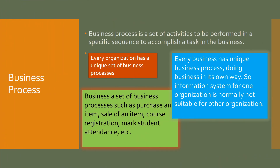We also need to learn about business processes, which are the core construct of any business. A business process is a unique way of performing activities in doing business — for example, the sale of an item or course registration. These activities must be arranged in a specific sequence. Every organization has unique business processes and performs them in a unique way, so a different and unique information system is required to perform such processes for a specific business.